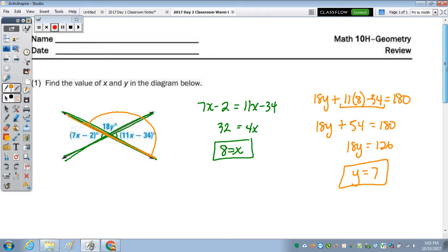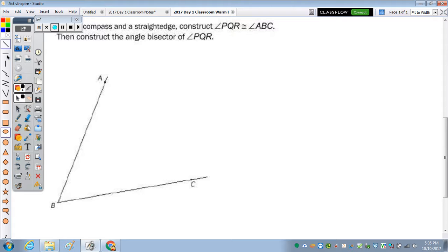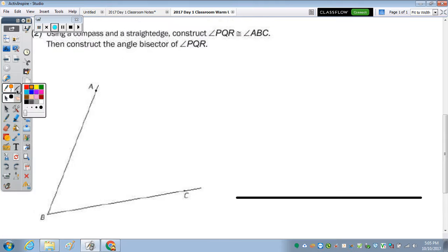And the construction. Using a compass and a straight edge, you're going to construct angle PQR congruent. So let's focus on that, and to start, you need to draw a ray, as you had no starting point or given ray.